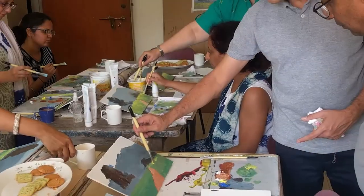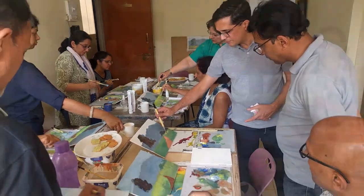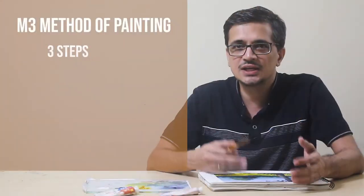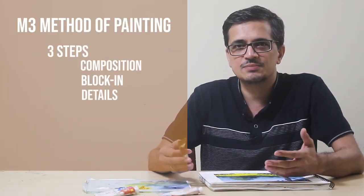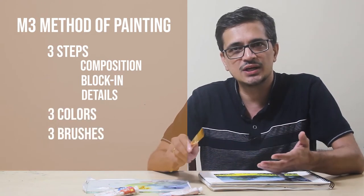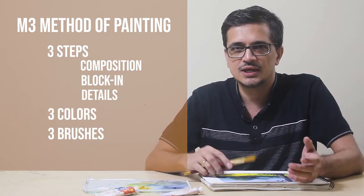The M3 method of painting evolved from eight years of my teaching art and simplifying the painting process. The secret number is three here. Three steps which are composition, blocking and detail, and we use just three colors and three brushes. Isn't that simple?